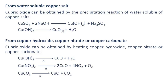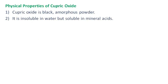From water-soluble copper salts, cupric oxide can be obtained by a precipitation reaction of water-soluble copper salts. Additionally, from copper hydroxide, copper nitrate, or copper carbonate, cupric oxide can be obtained by heating these compounds, as shown in the reaction.